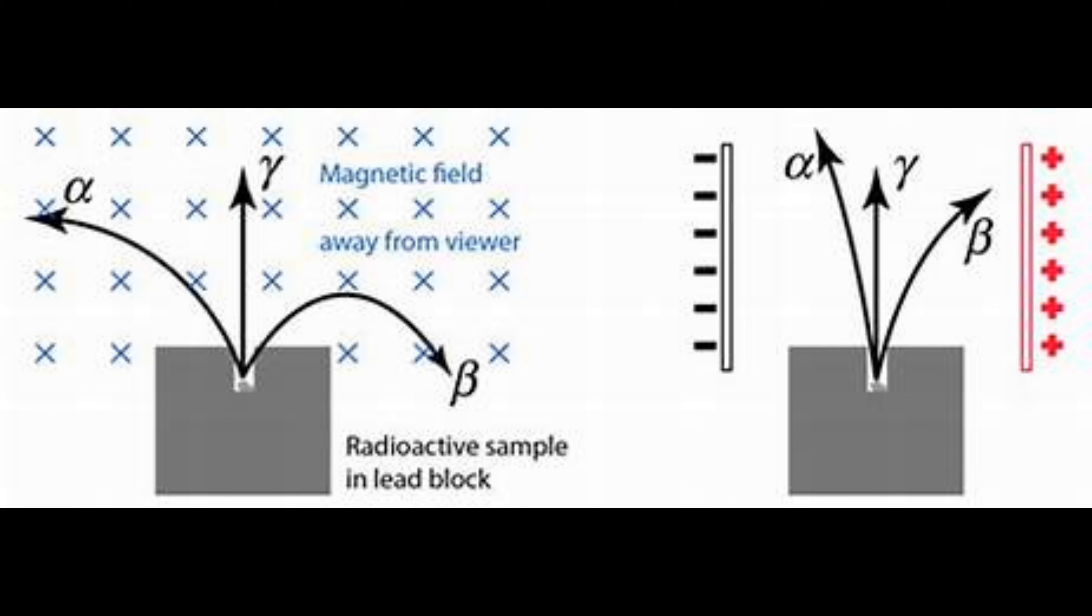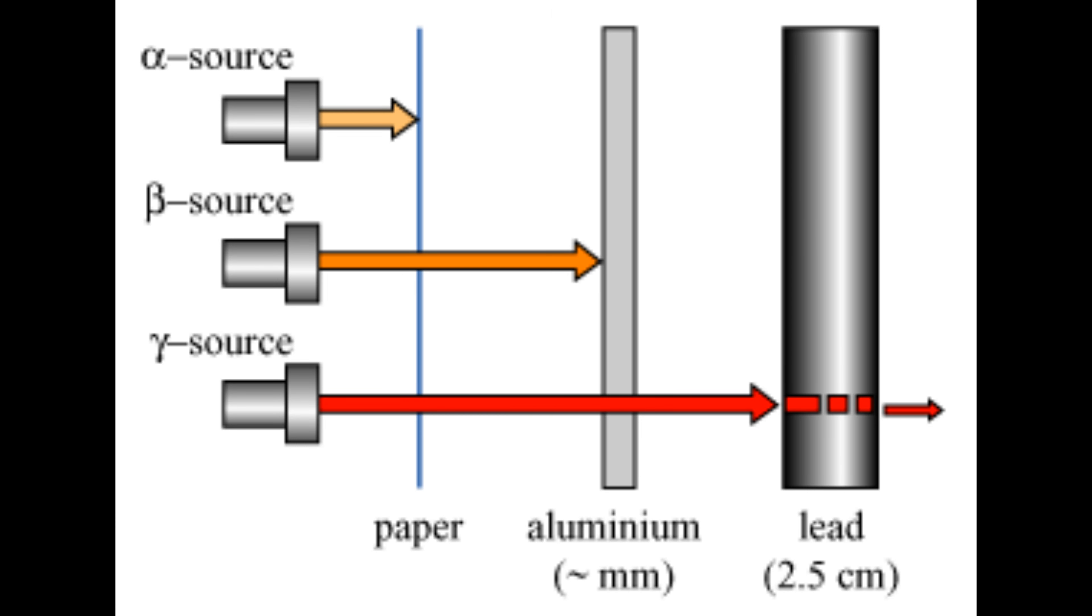Thus, alpha particles are positively charged and beta particles are negatively charged. Gamma rays are not deflected by magnetic or electric fields—they move straight. All these radiations affect photographic plates.